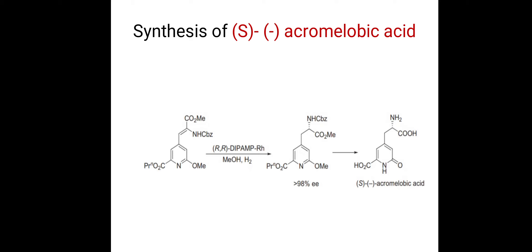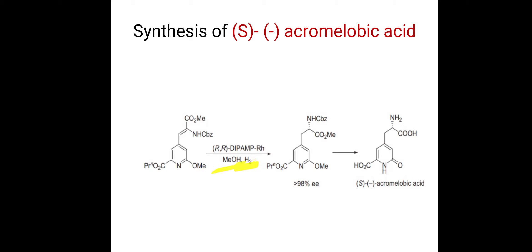The next reaction is the synthesis of S-acromylobic acid. Again in this starting compound, there is a carbon-carbon double bond. The catalyst is rhodium-RR-DIPAMP, and methanol is the solvent. Asymmetric hydrogenation takes place across the carbon-carbon double bond — hydrogen gets added, and the chiral center is formed at the carbon attached to nitrogen. Enantiomeric excess is greater than 98%, and the product further reacts to give S-acromylobic acid.